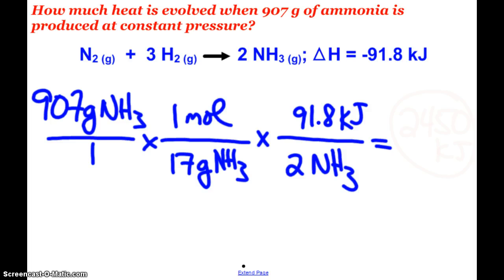Of course, I'm going to want to change that into moles. And then I can use the delta H, negative 91.8 kilojoules, as a conversion factor here. Now, it's important, since we're making 2 moles of ammonia in my balanced equation, I'm saying for every 2 moles of ammonia produced, 91.8 kilojoules is evolved.